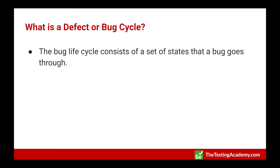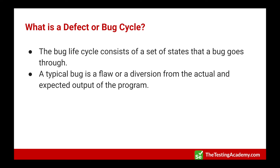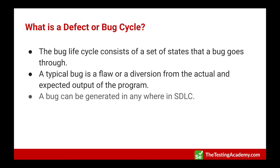Before getting into that, let's understand what a typical bug lifecycle means. A bug lifecycle consists of a set of states that a particular bug goes through. A bug is basically a flaw, or a divergence from actual results to expected results in a program. For example, if you have made an image uploading software and the image upload is not working as expected, then that's a bug or a defect.